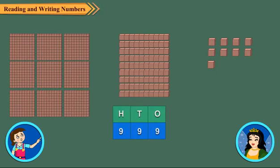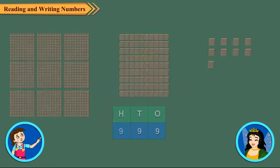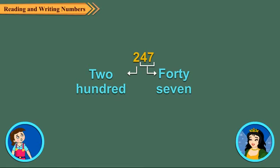Now, try to understand how we read three-digit numbers. I know! To read a three-digit number, we first read the hundreds digit and then read the tens and ones digit together.